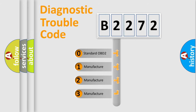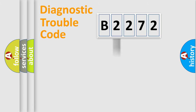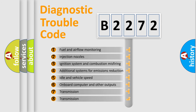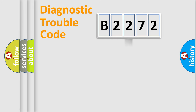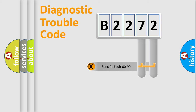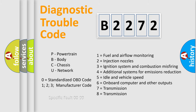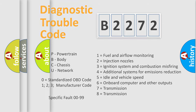If the second character is expressed as zero, it is a standardized error. In the case of numbers 1, 2, or 3, it is a more manufacturer-specific expression of the error. The third character specifies a subset of errors. This distribution is valid only for the standardized DTC code. Only the last two characters define the specific fault of the group, and such division is valid only if the second character code is expressed by zero.